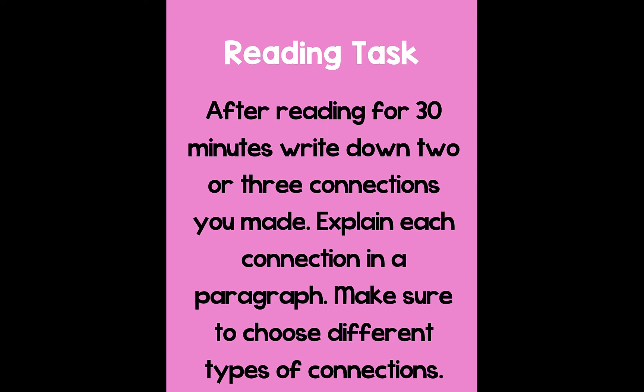Here's your reading task when you get making connections for homework. After reading for 30 minutes, write down two or three connections you made. Explain each connection in a paragraph. Make sure to choose different types of connections. For example, if your first connection is a text-to-self connection, then make sure that your second one is a text-to-world — not the same as your first one.